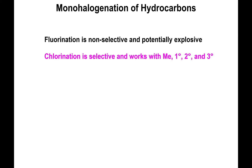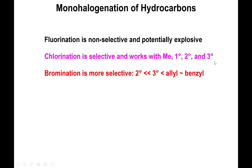On the other hand, chlorination is not per se selective, but we have a tiny bit of selectivity that we can use to our advantage. Chlorination does work with all four carbon types — methyl, primary, secondary, and tertiary CH bonds — but it shows a slight preference for primary, secondary, and tertiary CH bonds over methyl.